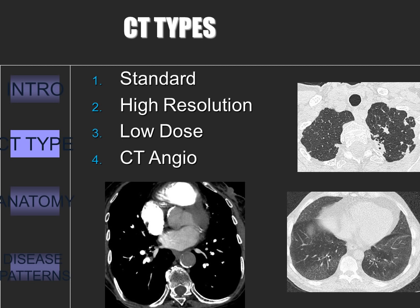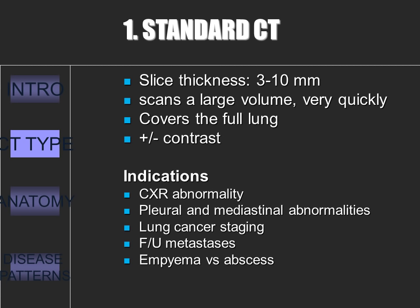There are four main types of CTs for imaging the lungs. The first is the standard CT, or the equivalent of a spiral helical CT. Second is the high resolution CT. Next is the low dose CT. And last is the CT angiogram. We will explore all four a little more now.